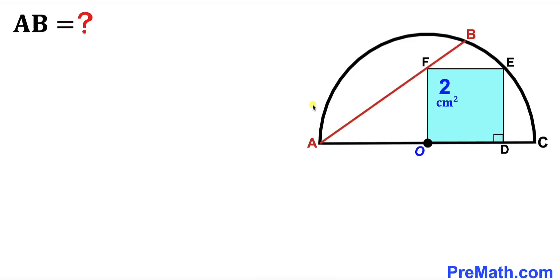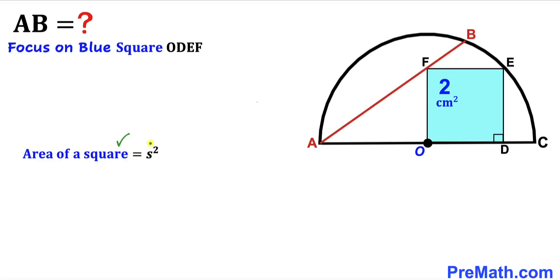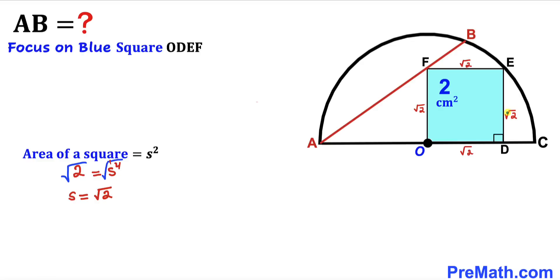Let's focus on the blue square ODEF. We know the area of this square is 2 cm². Recalling the area formula: area = s², we get 2 = s². Taking the square root of both sides, the side length s turns out to be √2. So the side length of this blue square is √2 across the board.